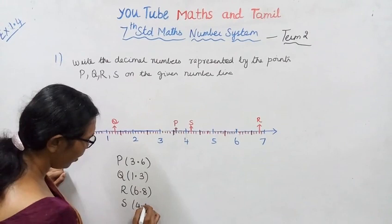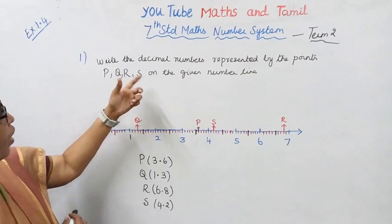Point S: one, two. S is at 4.2. So on the number line, we have identified the points P, Q, R, S.